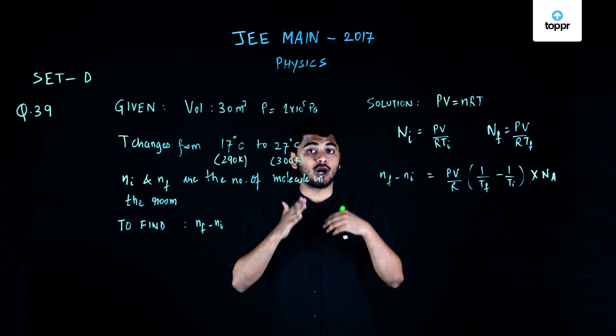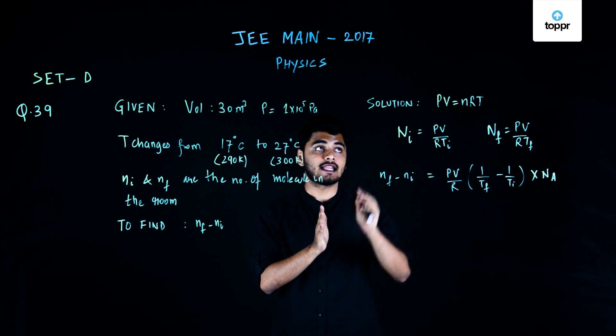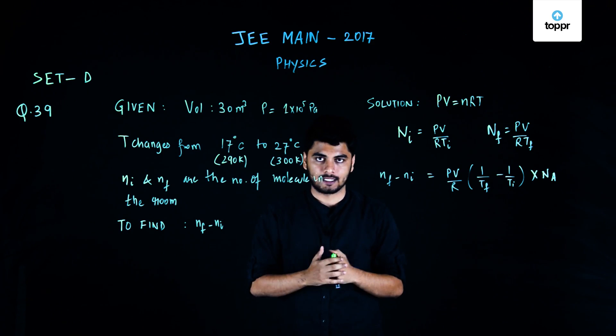Now, in order to solve this question, we will be using the principle of number of moles, that is n is equal to PV by RT, or the ideal gas formula PV is equals to nRT.